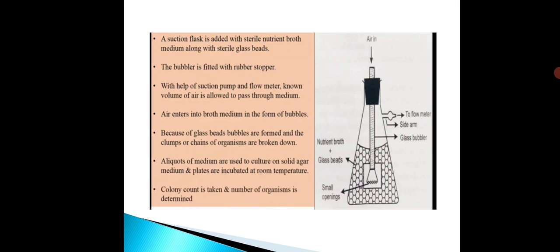In the flask there is sterile nutrient broth and sterile glass beads. The bubbler is fitted with a rubber stopper. With the help of the suction pump and flow meter, a known volume of air is allowed to pass through the medium. The air enters into the broth medium in the form of bubbles. Because of the glass beads, bubbles are formed as the air enters the flask.